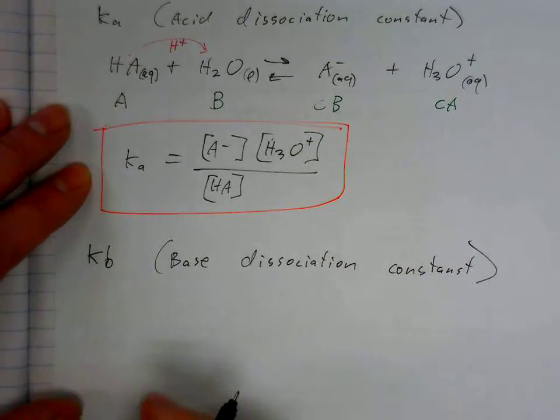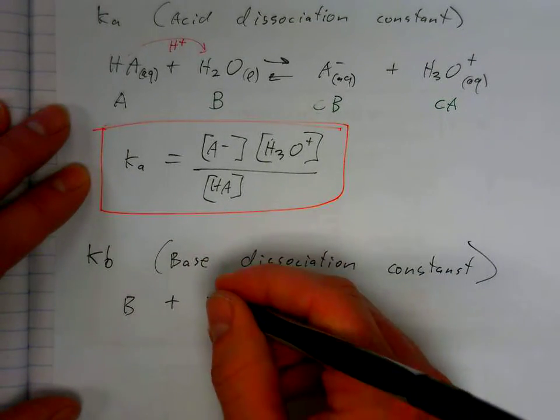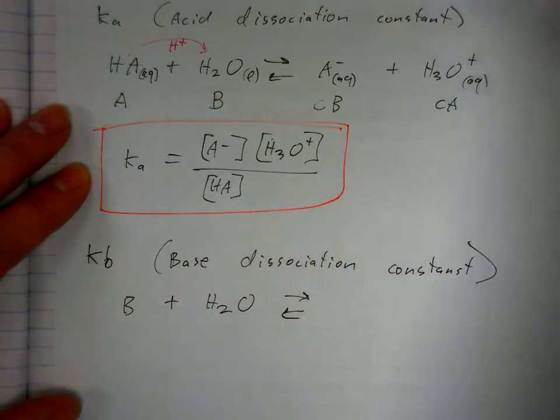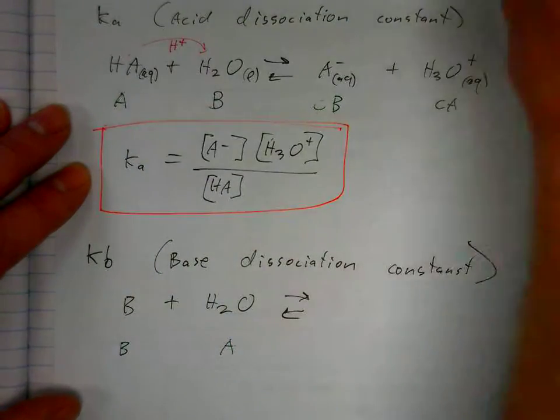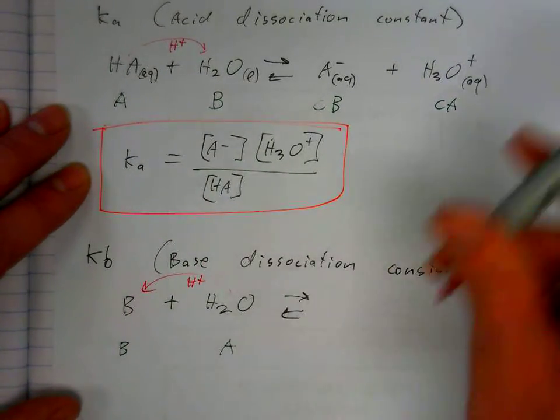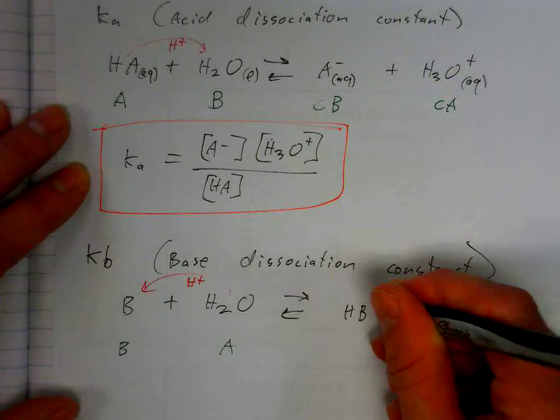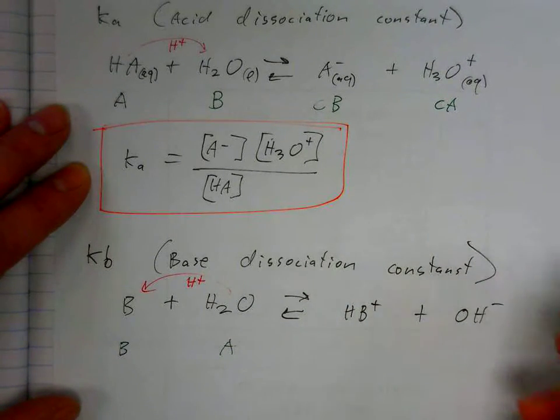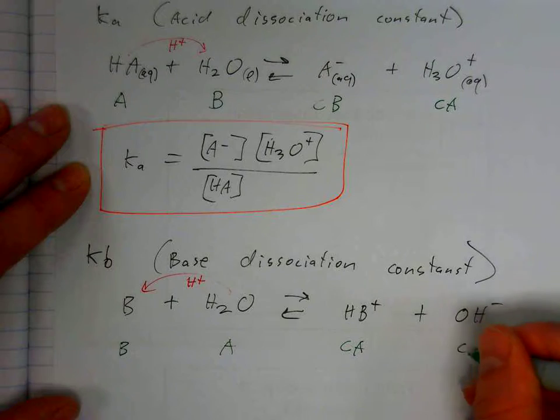Let's start with the generalized reaction. Let's say that B stands for base, and it's going to react with water. So if B is the base, the proton or hydrogen ion goes from water to the base. And as a result, we get HB plus and OH minus. So we have the conjugate acid, conjugate base.